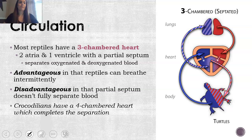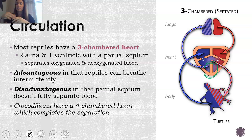Speaking of bleeding, let's talk about circulation. Reptiles have a three-chambered heart — two atria and a ventricle — but this time they have a partial septum, which you can see in this picture. This kind of helps to separate oxygenated and deoxygenated blood, though not quite the same as having two ventricles like birds and mammals have.